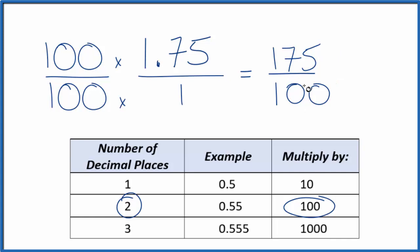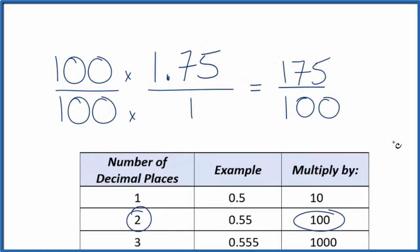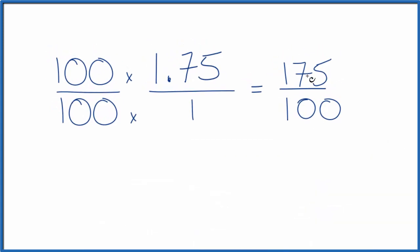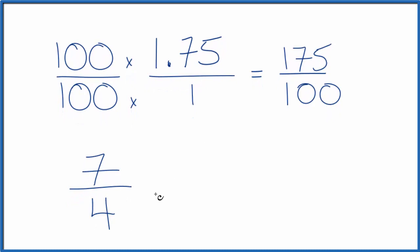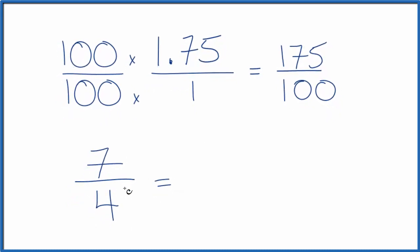Let's put this in a more simplified form. 25 goes into 175 seven times, and 25 goes into 100 four times. So we can write this as the improper fraction 7 fourths, and its value would be the same as 1.75.